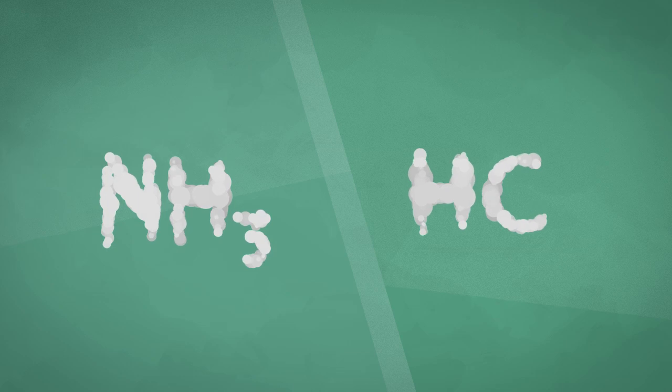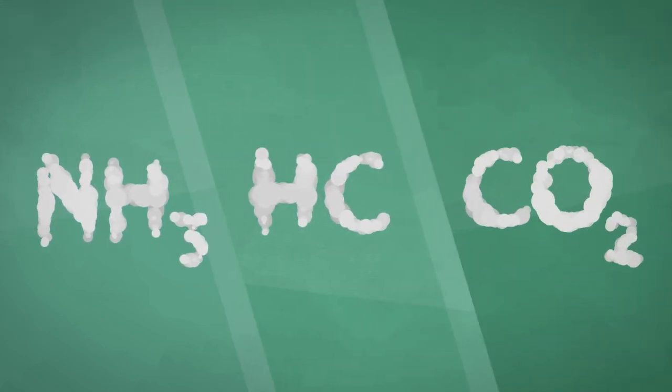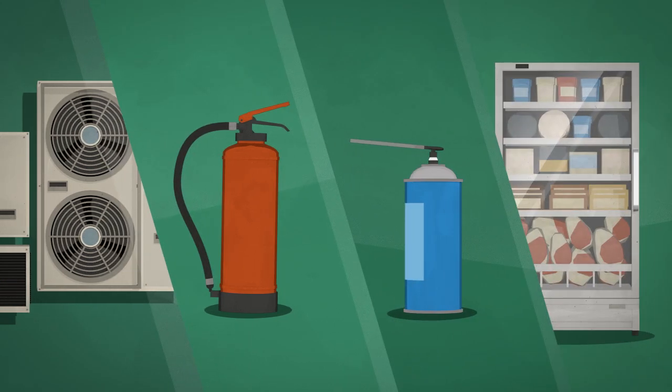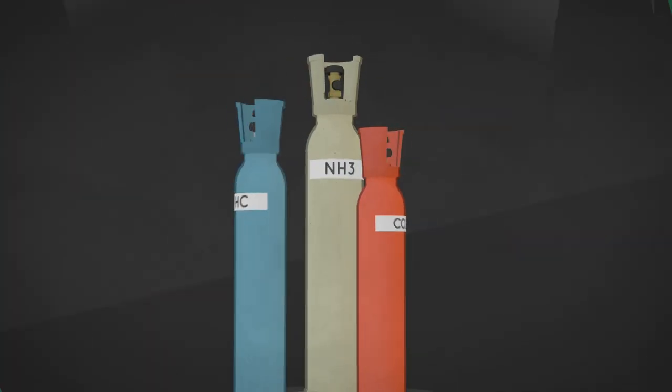We have to stop this now by changing to environmentally friendly solutions, such as ammonia, hydrocarbons and carbon dioxide. Air conditioners, fire extinguishers, aerosols and fridges can all use these natural alternatives to climate-damaging F-gases. And they're already available.